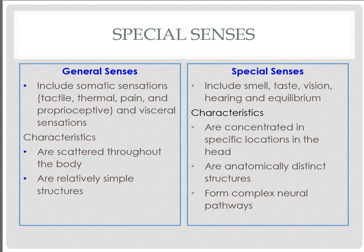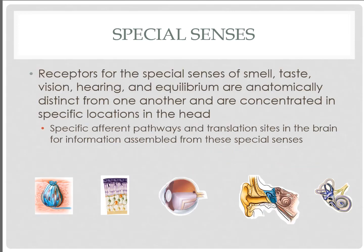Special senses include smell, taste, vision, hearing, and equilibrium. These contain exteroceptors located specifically in regions of the head — anatomically distinct structures attuned to pick up their respective stimuli and form pathways through the same three-order neurons to the central nervous system. These receptors are very distinct from one another, picking up different special senses. They're located in areas of the head, as opposed to general senses like proprioception and skin receptors which are located across the entire surface of the skin and inside the body.